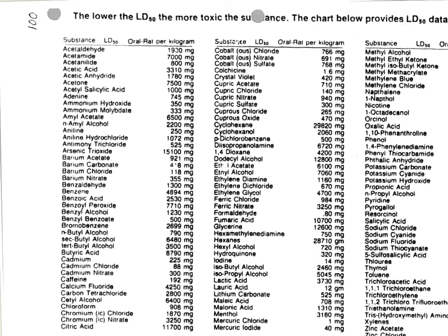You can see at the top here, it says oral rat per kilogram. So oral means they fed it to the rats and it's milligrams per kilogram of the rat's weight. If we look at down here, cadmium is found in rechargeable batteries. 225 milligrams of cadmium per kilogram of rat weight will kill 50% of the rats. Let's do some calculations with that.